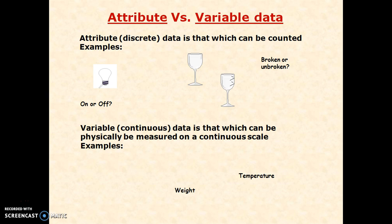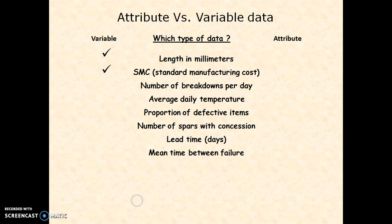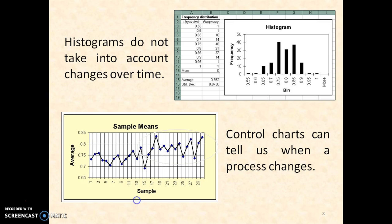When we start measuring variations and generating data, the data could be of two categories. First is attribute data, which can be counted. Second is variable data, which can be physically measured on continuous scales. We can measure dimensions, temperature, viscosity. Examples include length in millimeters, number of breakdowns, average daily temperature, proportion of defectives, and number of lamps that fail.